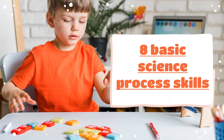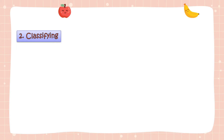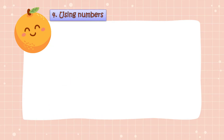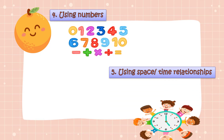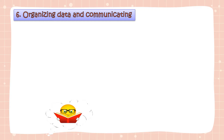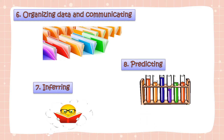Here are the eight basic science process skills. Number one: observing. Number two: classifying. Number three: measuring. Number four: using numbers. Number five: using space-time relationships. Number six: organizing data and communicating. Number seven: inferring. And the last, number eight: projecting. Those are the eight basic science process skills.